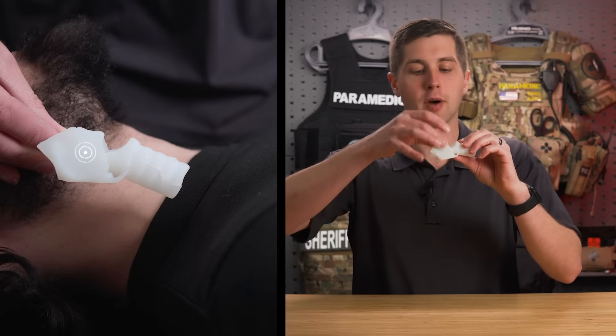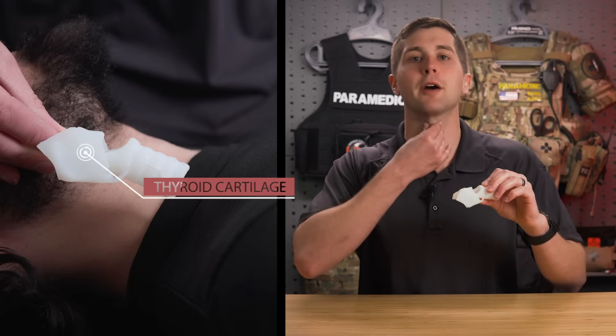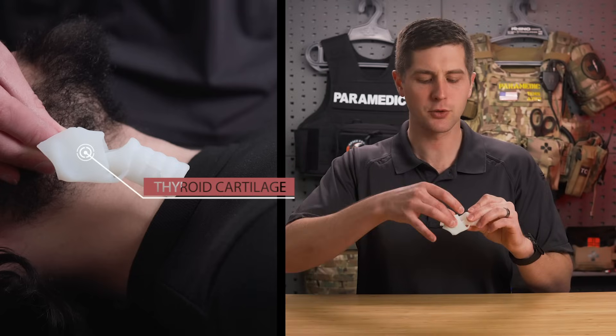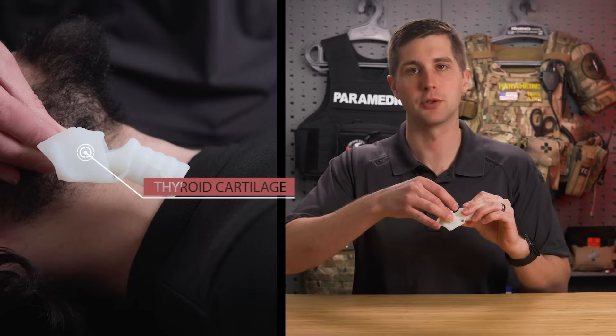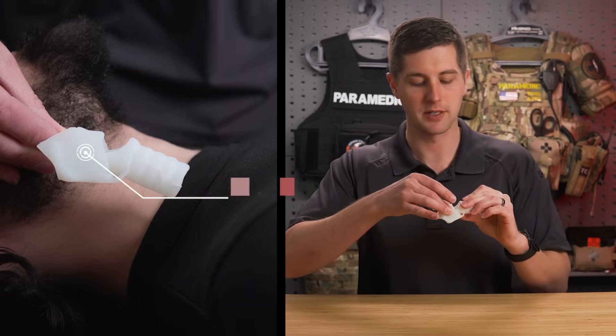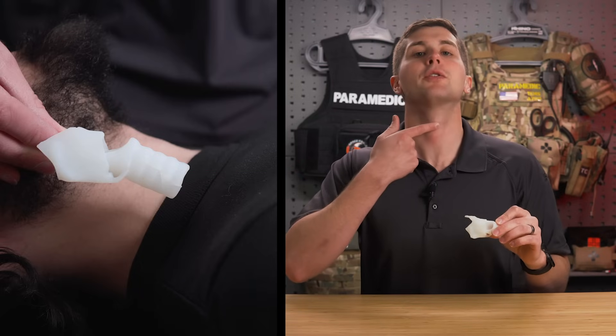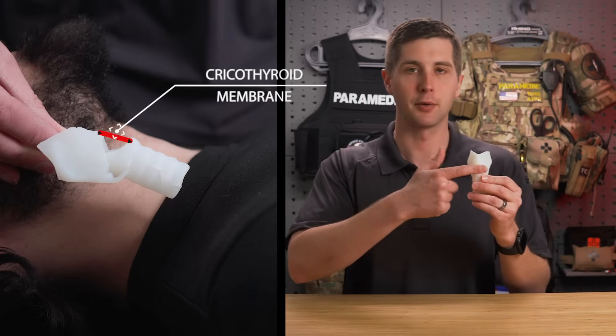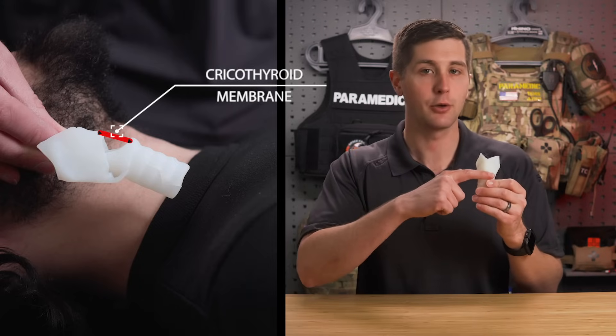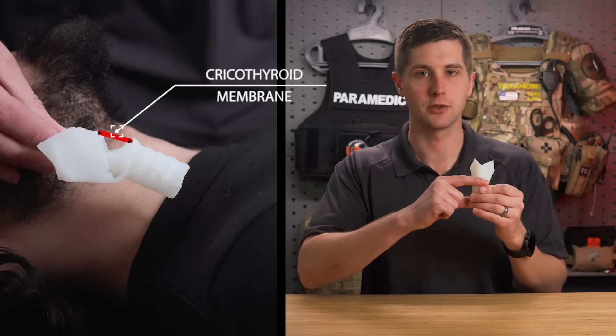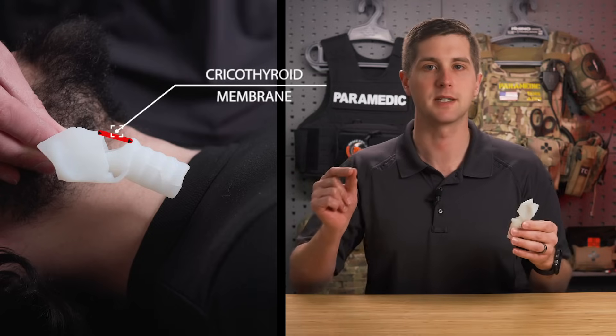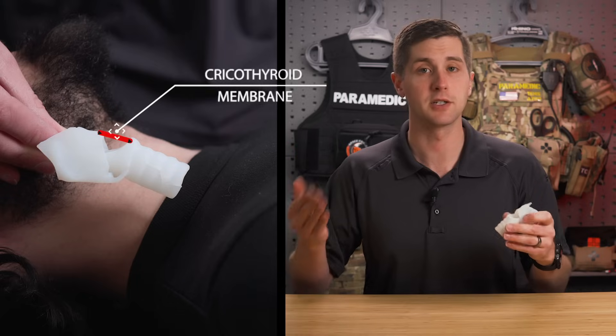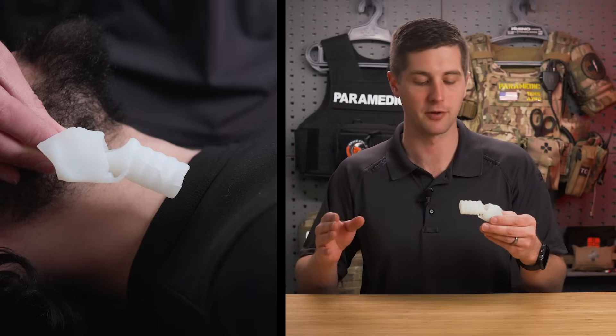As you come down or right above that prominence, you will find the thyroid cartilage. If you come right over your Adam's apple, you're going to roll down into what's called the cricothyroid membrane. Right here, this is exactly where we are going to cut to insert the tube. It's a space with a membrane instead of hard cartilage like you have above and below, and it does allow you to actually insert that tube with minimal effort.